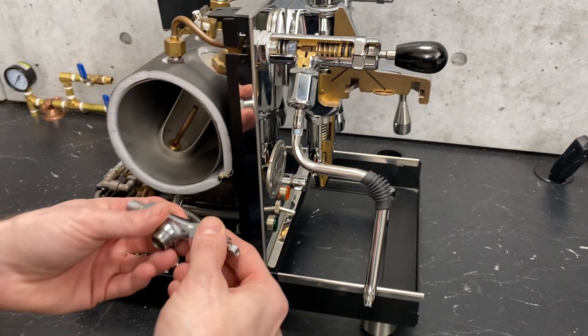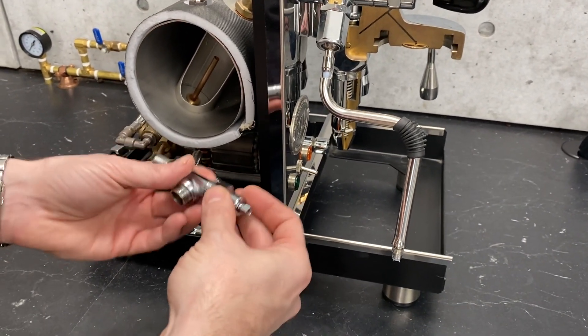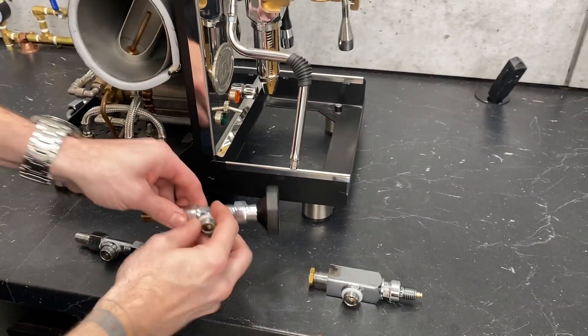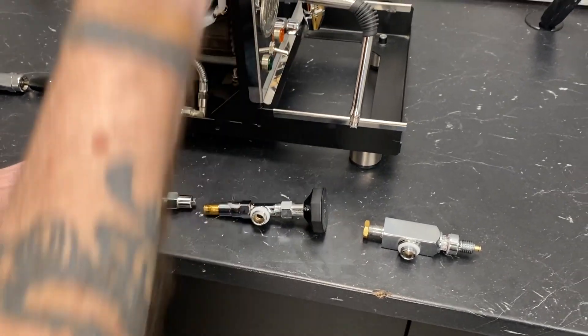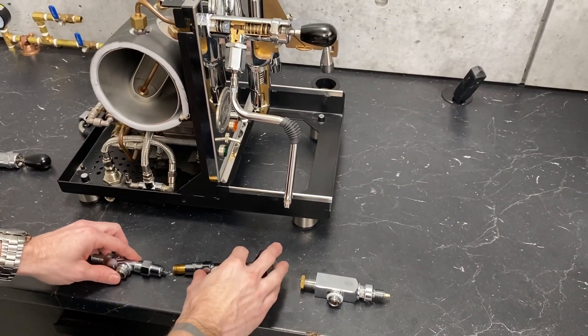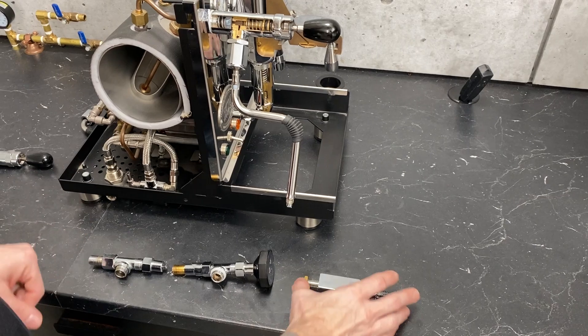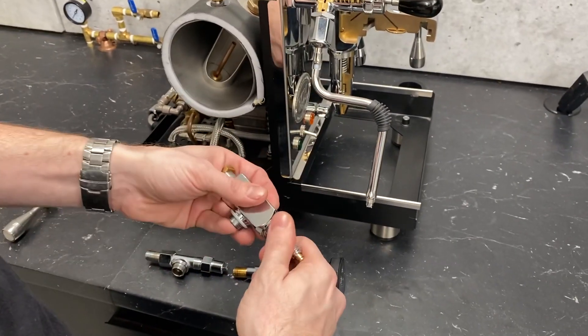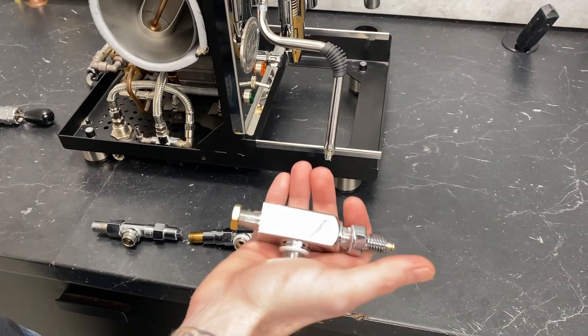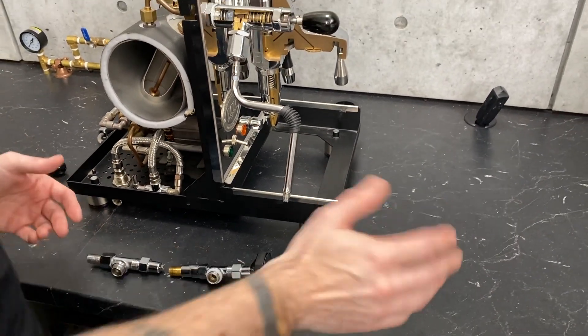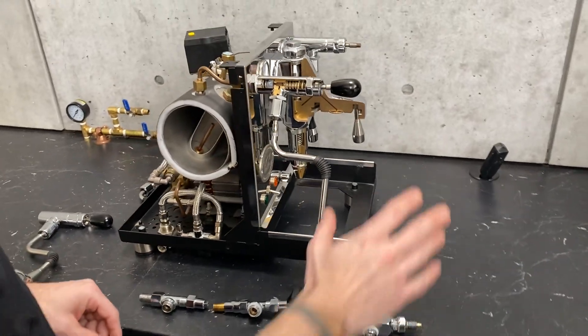Down here I have an Expo Bar valve, a Creme valve. These two are basically like this and the Synchronica. They're the same internally, just a little bit different design, and then we have this one that's just off of a 500, 600, 700 Profitec. So those are a couple of the different things we've got going on here.